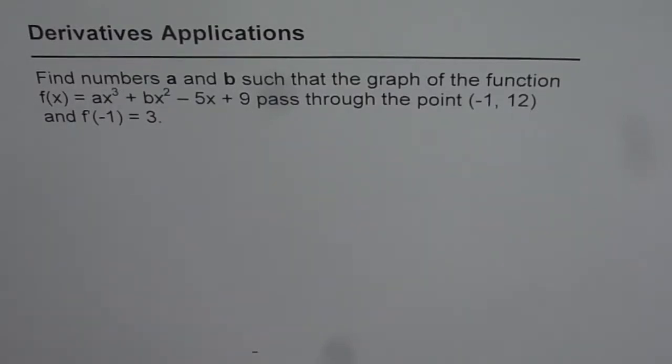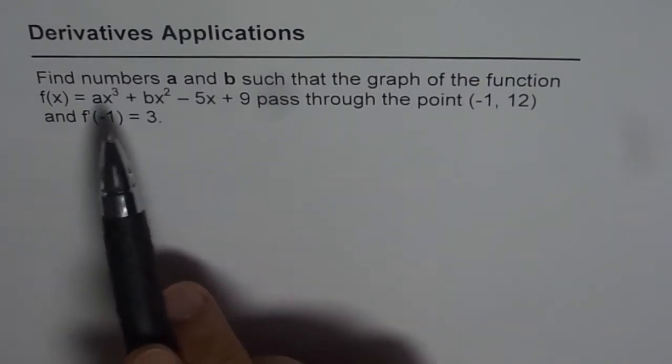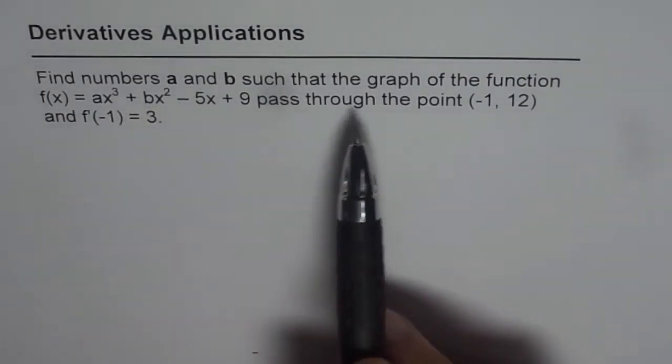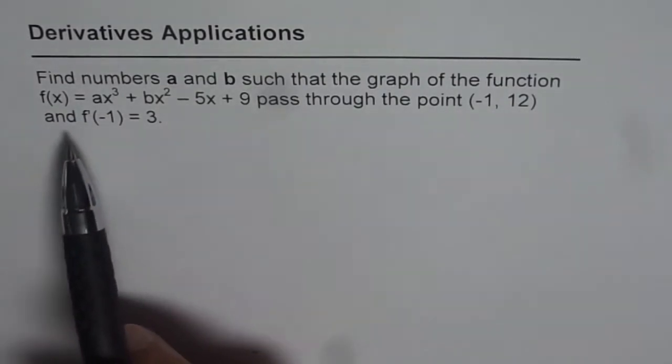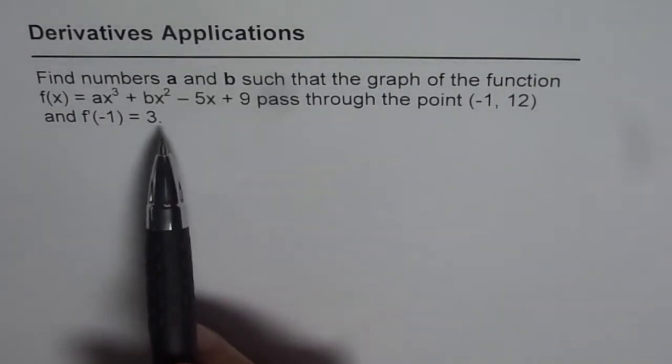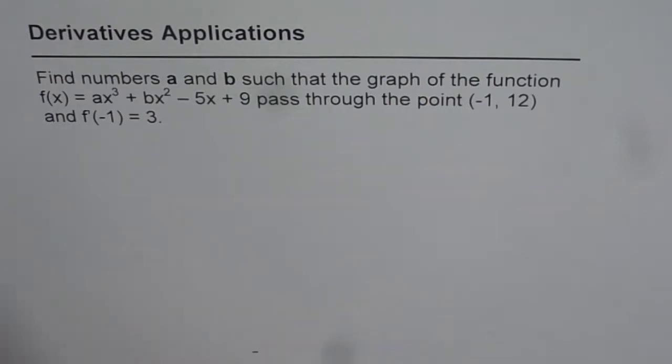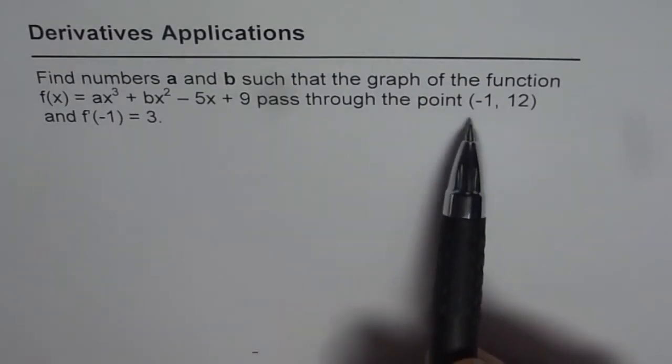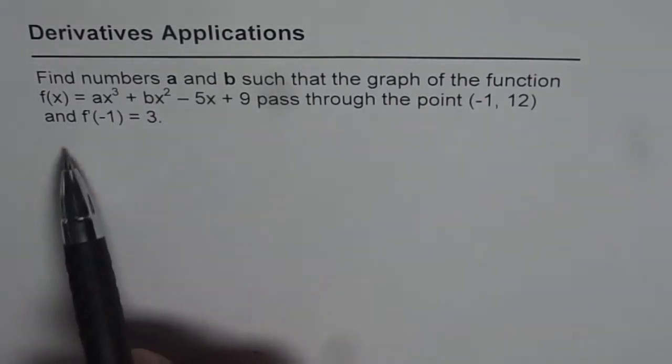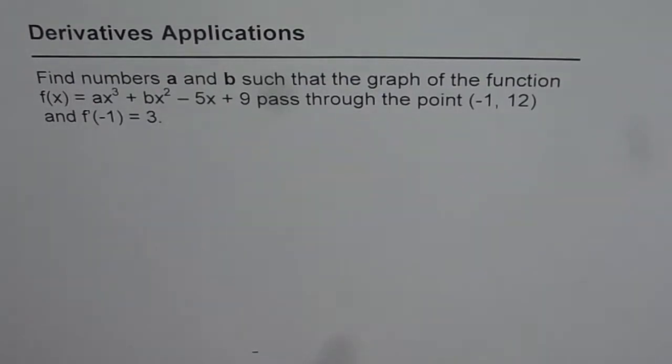So let's explore how to apply derivatives to find equations. Question here is, find numbers a and b such that the graph of the function f(x) = ax³ + bx² - 5x + 9 passes through the point (-1, 12) and f'(-1) = 3.